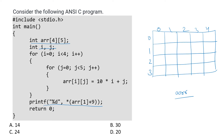They are looping over this array using two for loops, traversing each and every element and initializing it using 10 times i plus j — which means 10 times the row value plus the column value. These are our i indexes and these are our j indices. Let us fill the entire array and then determine what will be the output printed.